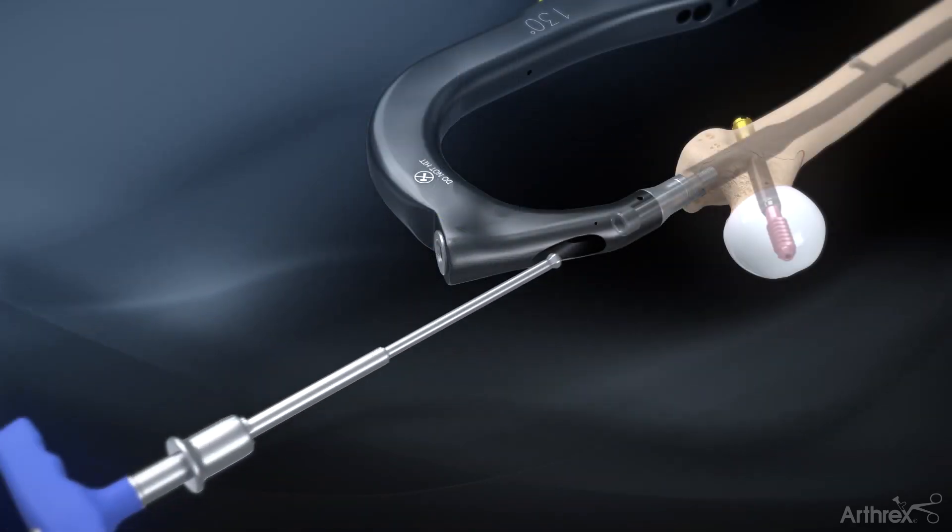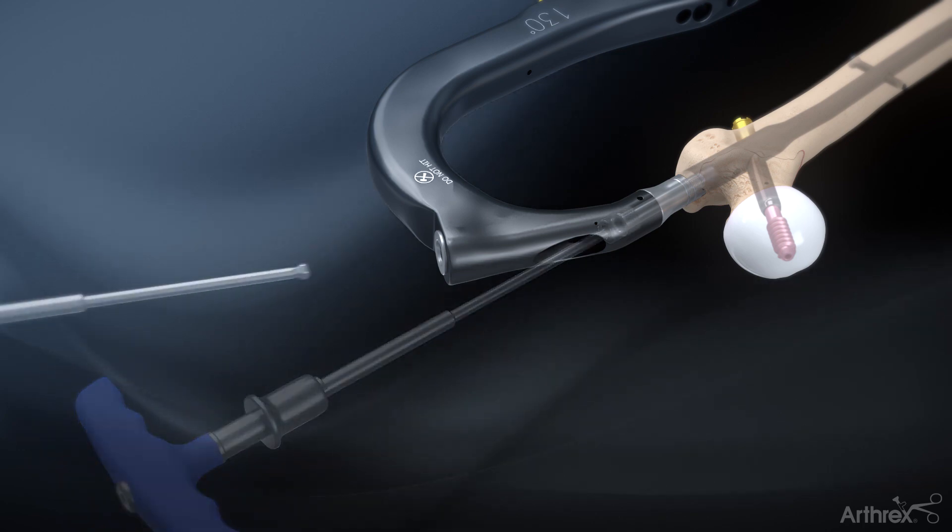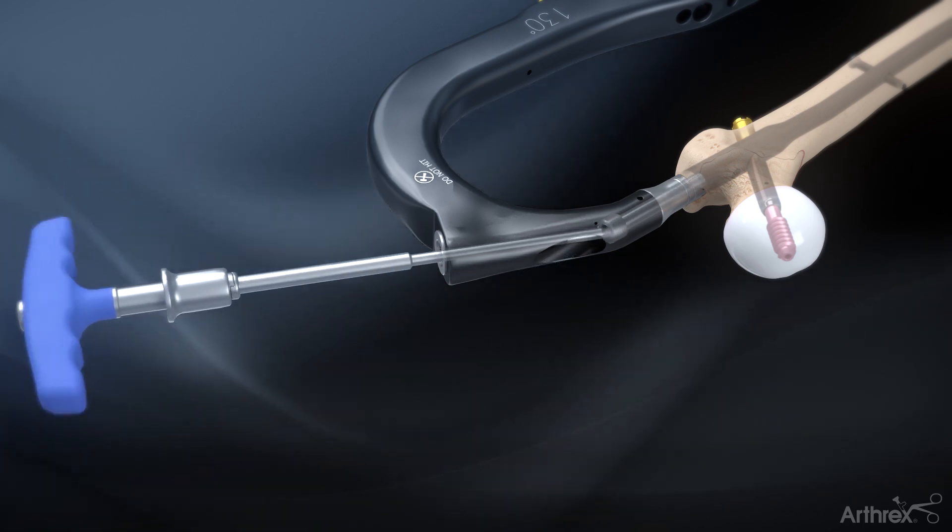To remove the targeting arm, unscrew the locking bolt from the jig through either the top hole or impactor pad attachment hole.